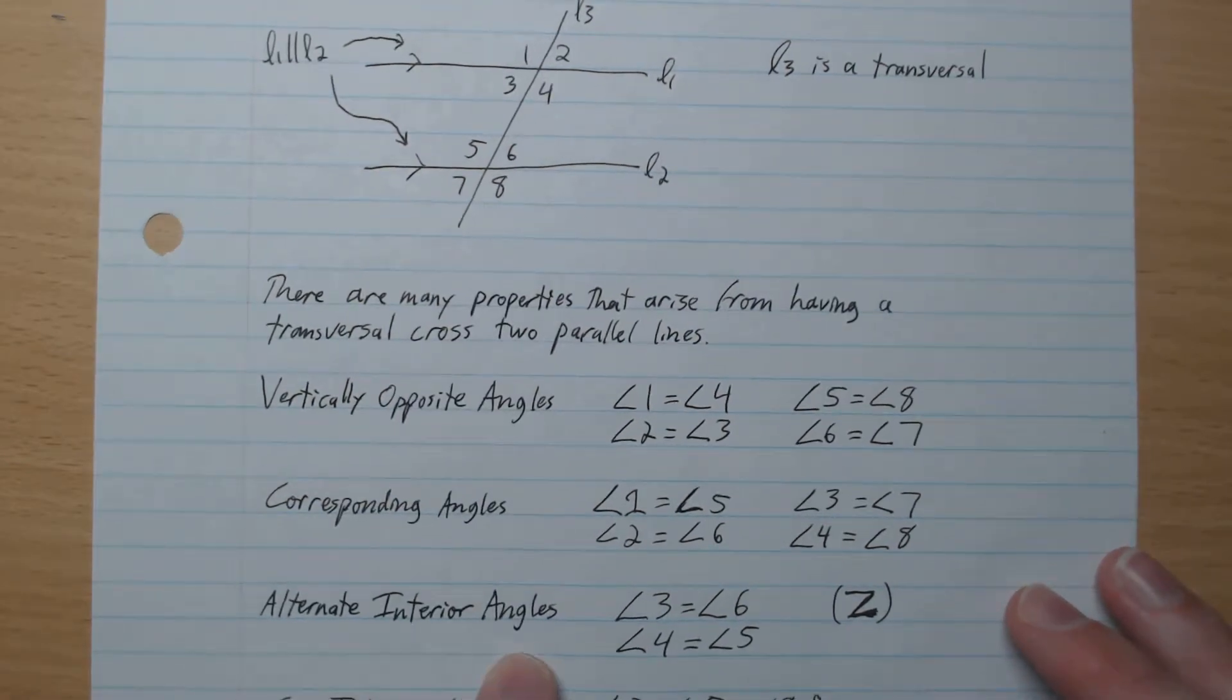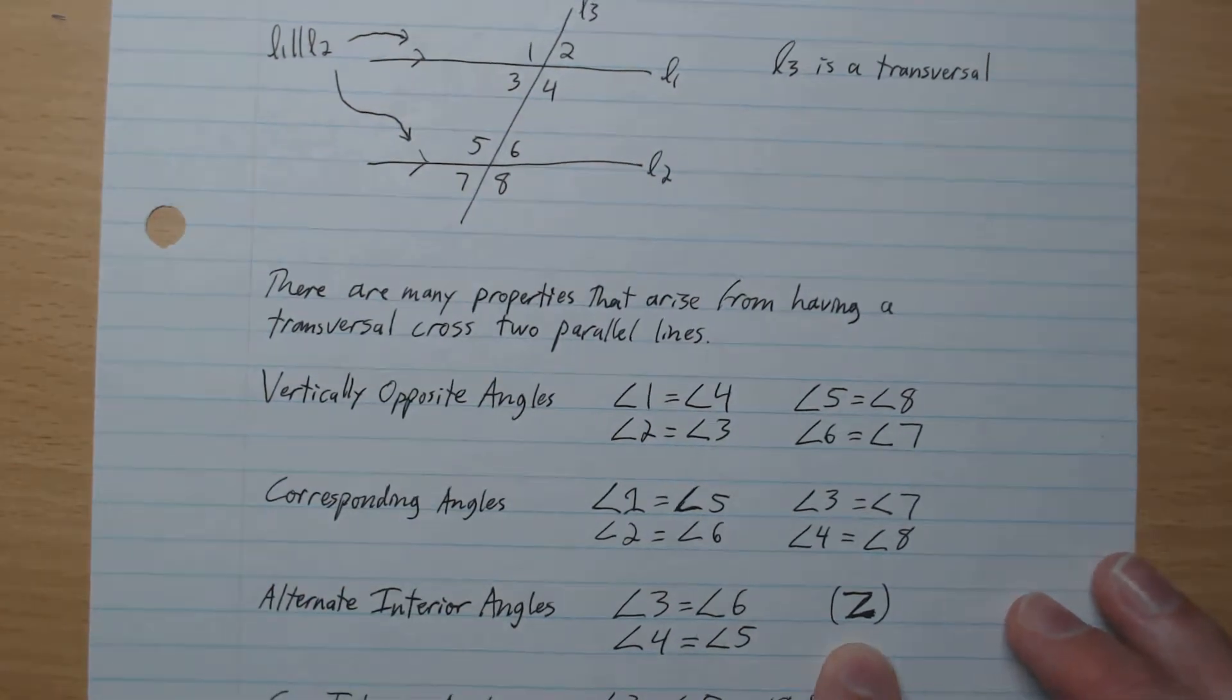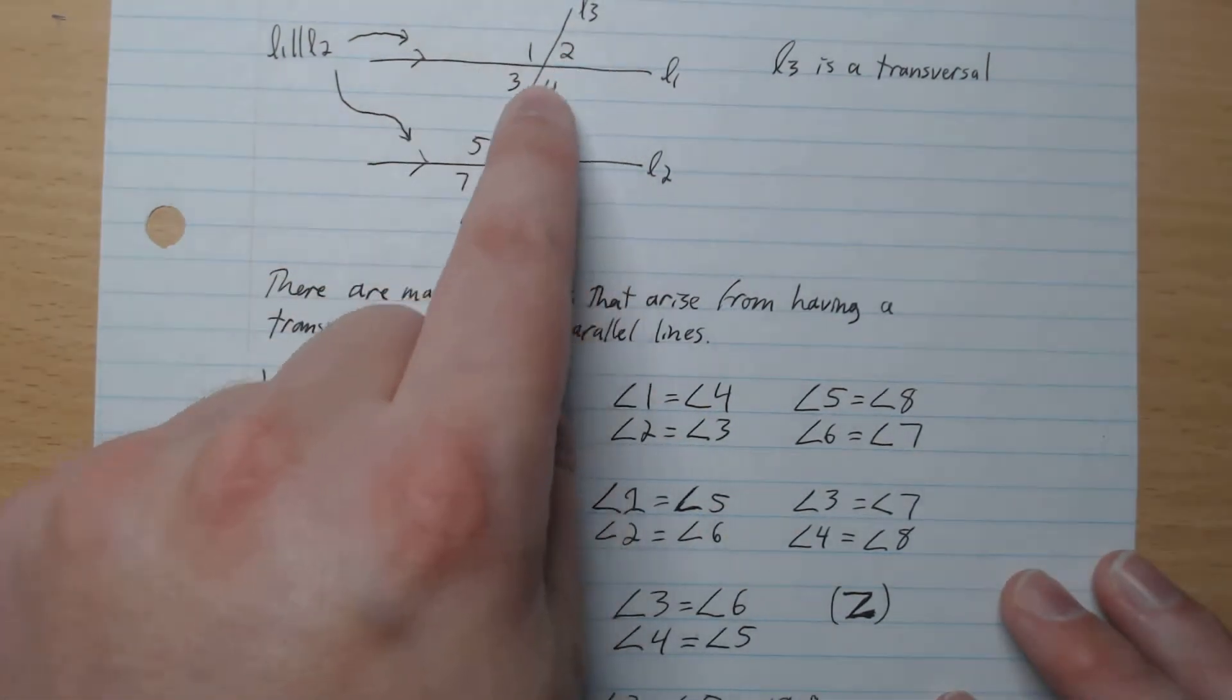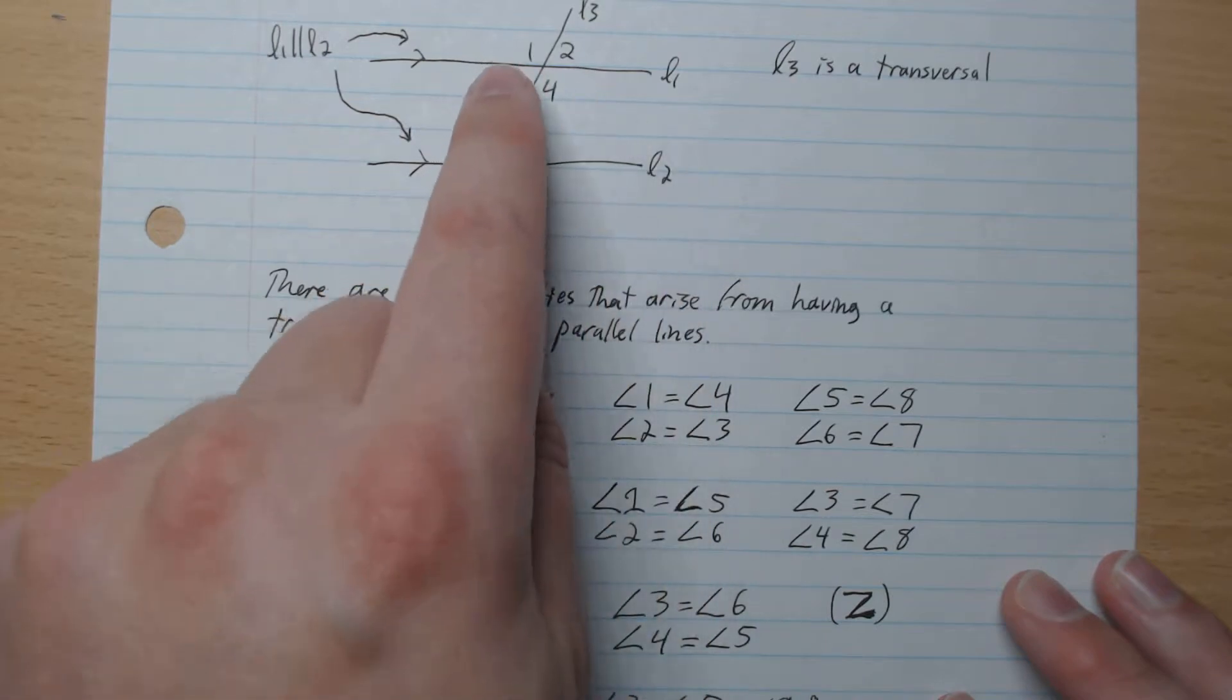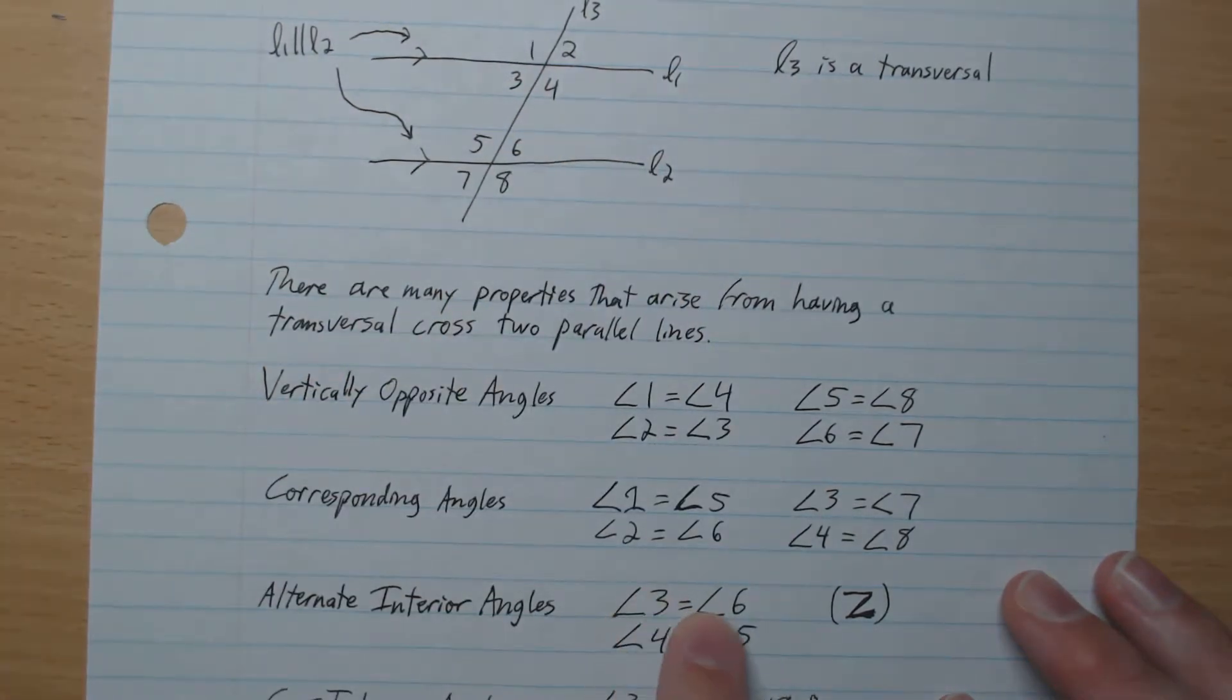The other one is alternate interior angles. I remember this one with a Z. So if we have a little Z like this, 3 and 6 are the same angles.